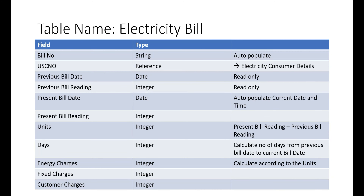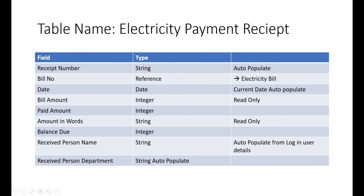For example, the Government of Telangana may give 200 free units. If the government gives 200 units, those units will show directly, and the subsidy amount — 200 units multiplied by the energy charge rate — is automatically calculated, showing how much subsidy the government is giving. All of this comes into the Electricity Bill table.